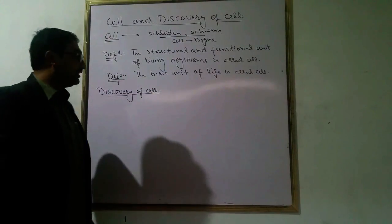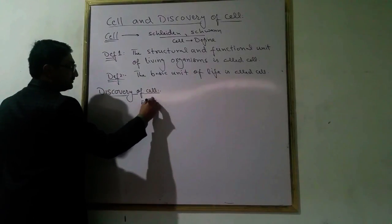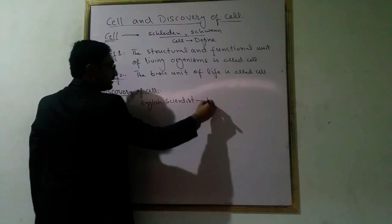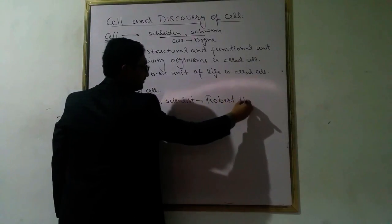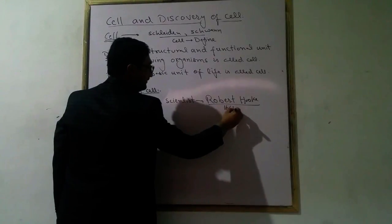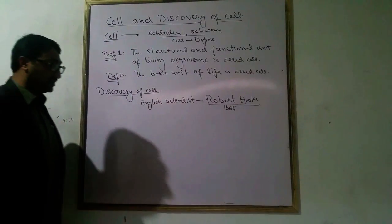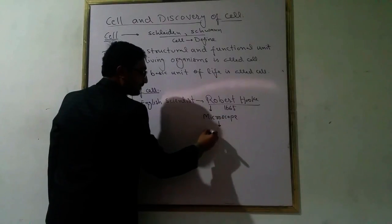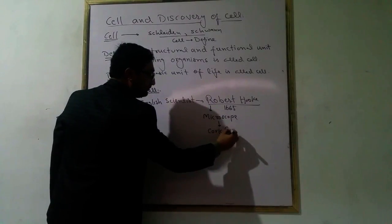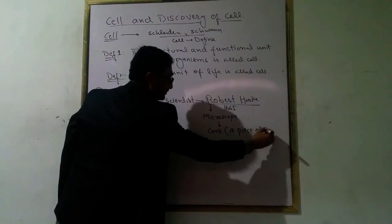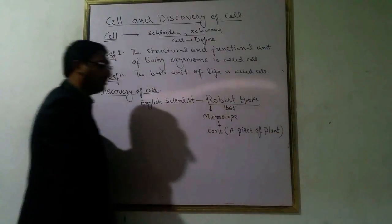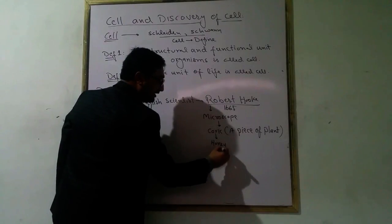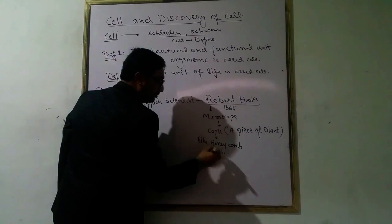Cell discovery: Robert Hooke, an English scientist. Robert Hooke, in 1665, discovered the cell. He used a microscope and observed a cork plant under the microscope.